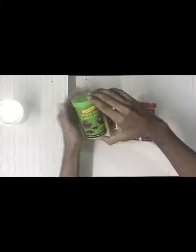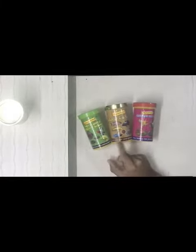The third type is tubifex worms. I feed my fish on alternate days. In the morning, I feed pellets. In the evening, bloodworms, and at night, tubifex worms. These three varieties of fish food I feed, so the fish color will get the best quality.